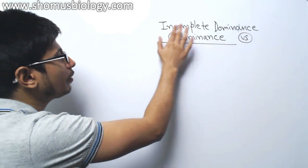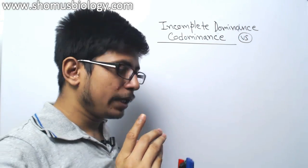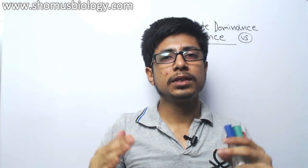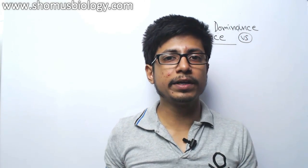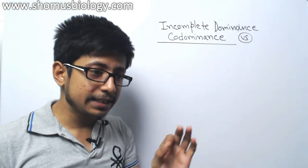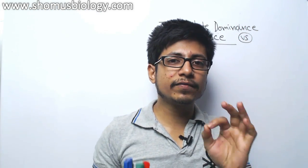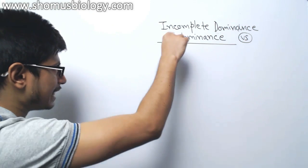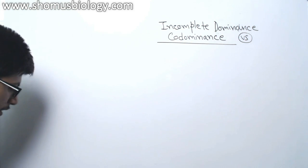So if you look at here, in incomplete dominance, here we have one gene for specific characteristics and two different alleles are there for that same gene, one dominant one recessive. Now in case of incomplete dominance, the dominant allele is failed to provide its effect to the next generations. So let me give you an example of incomplete dominance very fast.